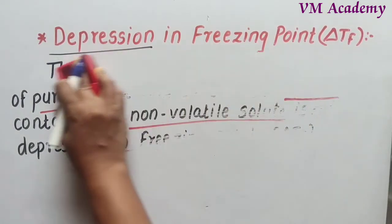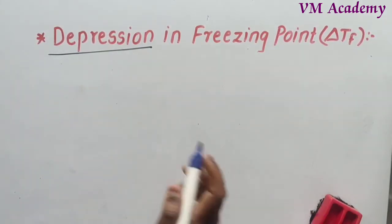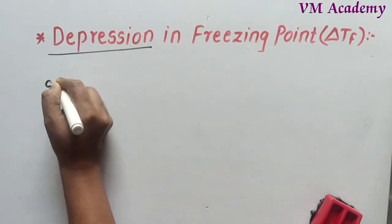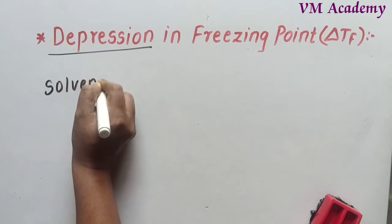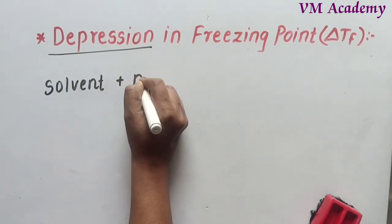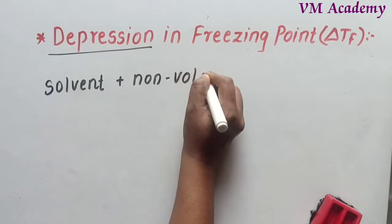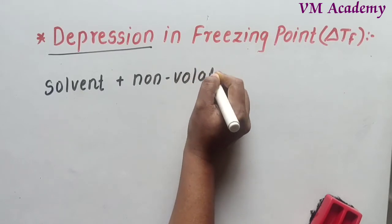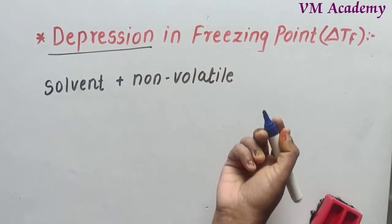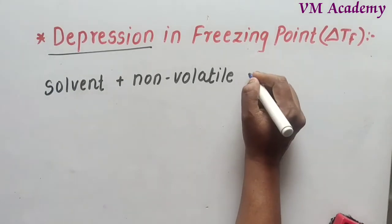So we have seen all three colligative properties. The effect on the solvent: whenever we add a non-volatile solute to the solvent — examples of non-volatile solutes are urea, sugar, glucose, salt — so when you add the solute, these three effects are observed.